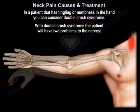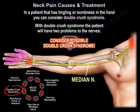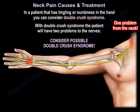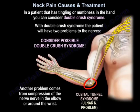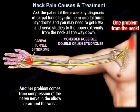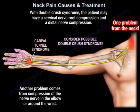In a patient that has tingling or numbness in the hand, you can consider double crush syndrome, which means the patient will have two problems affecting the nerves. One problem comes from the neck, and another comes from compression of the nerves in the elbow, like cubital tunnel syndrome, or around the wrist, like carpal tunnel syndrome. Ask the patient if they have had any diagnosis of carpal tunnel or cubital tunnel syndrome. You may need to get imaging and nerve studies of the upper extremity from the neck all the way down, as the patient may have both a cervical nerve root compression and a distal nerve compression.